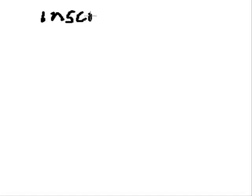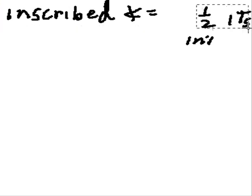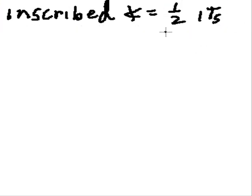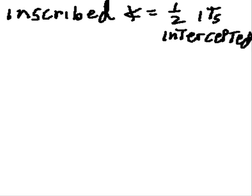We want to prove that an inscribed angle — that's an angle inscribed in a circle — equals one half its intercepted arc. Here we go.